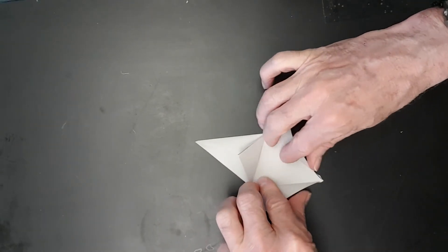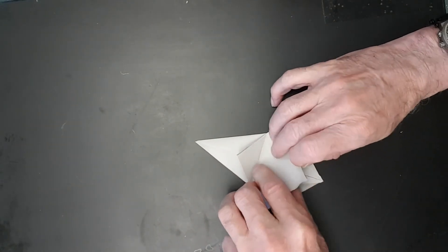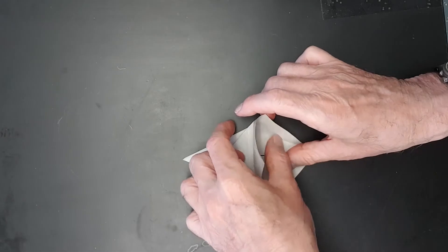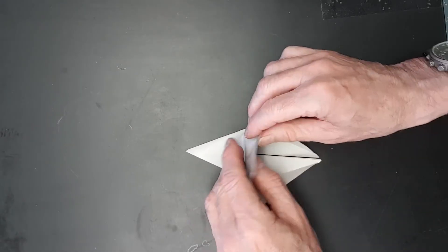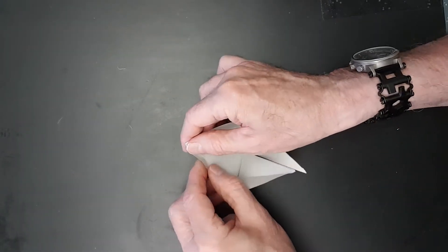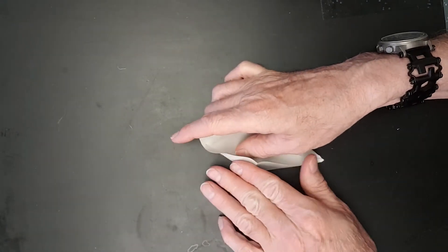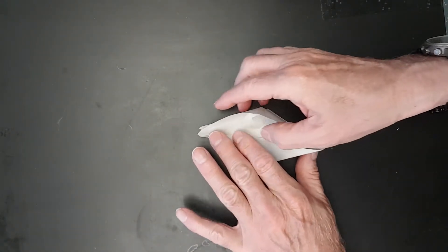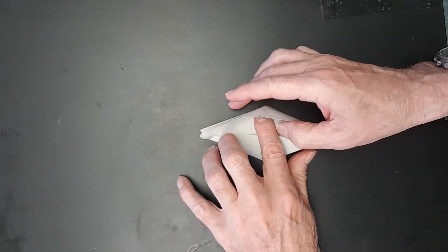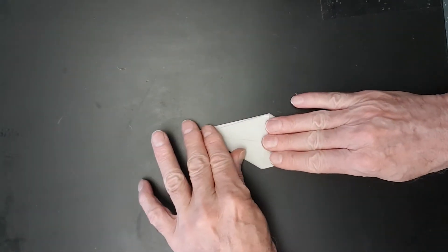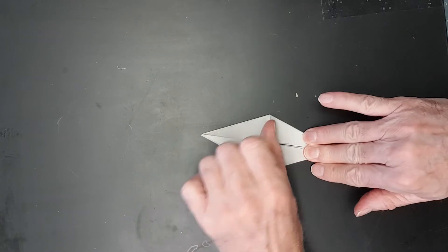Now we open it up like we did on the other side and we're going to do that petal fold again. Remember these are the correct way but the ones on the top they're the wrong way. So they're harder to do. So you got to kind of push on them a little bit and get them lined up. And there we go. Now we have the other side's wings made.